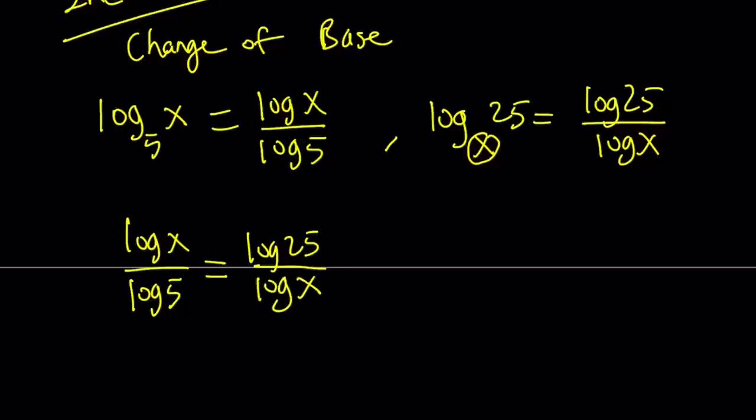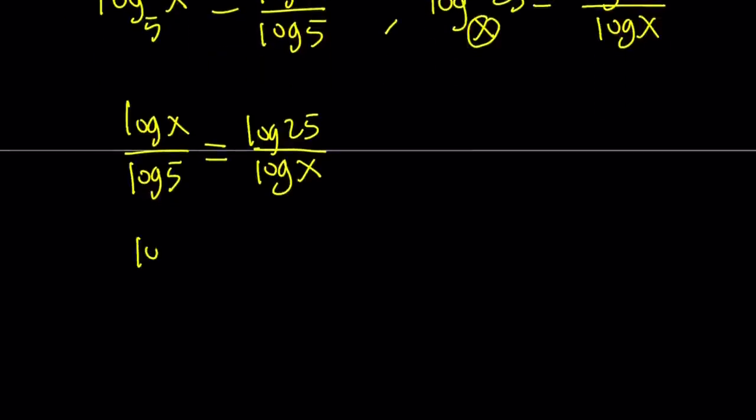And for me, we can do cross multiplication. Log x times log x is going to give us log x squared. And then what about log 5 times log 25? You can't just multiply logs like that. You can log a product, but the product of logs doesn't really make much sense. Unless you can convert one to another. And in this case, we can do the following.